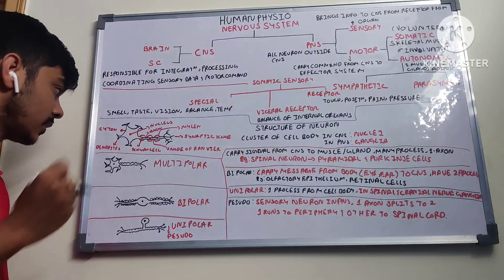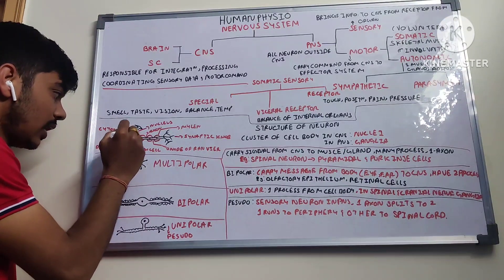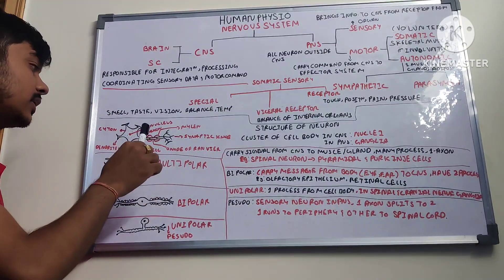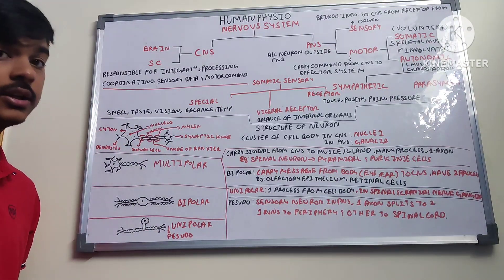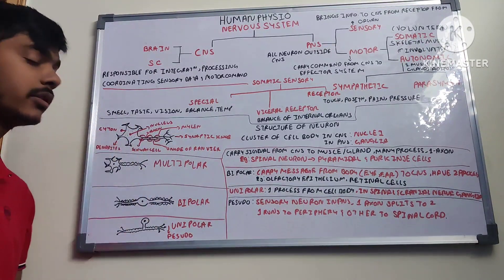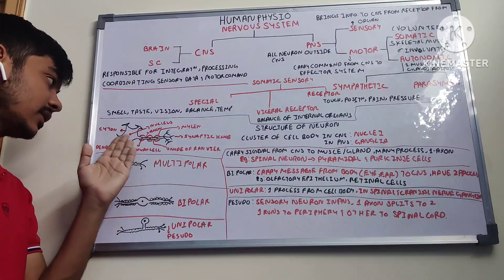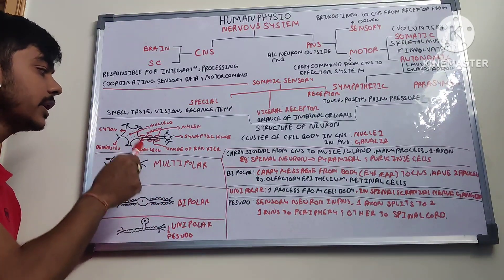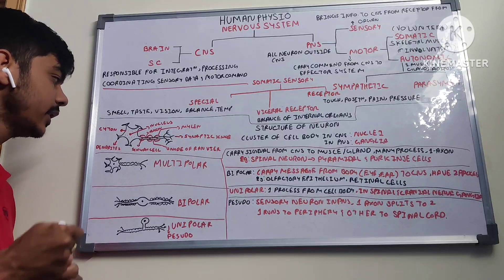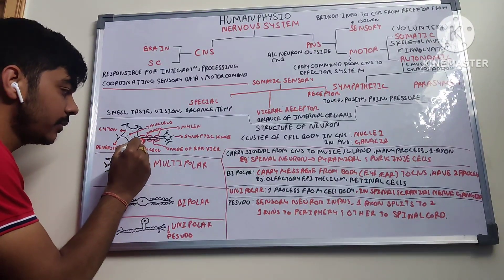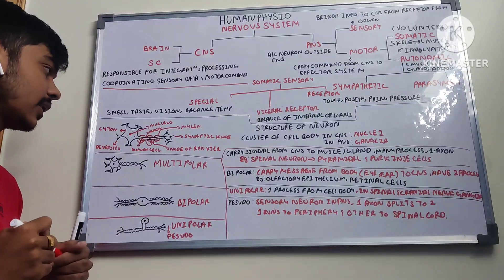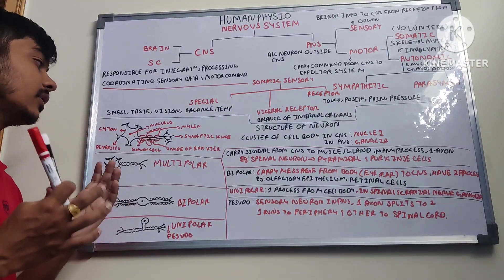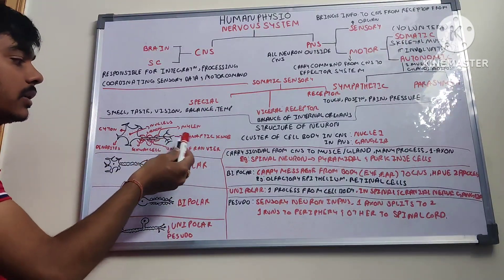There are two types of neurons: the myelinated neuron and the non-myelinated neuron. A myelinated neuron has a myelin sheath, and each myelin sheath consists of Schwann cells. The gap between them is called the node of Ranvier. At the nodes, saltatory conduction takes place — the impulse jumps from one node of Ranvier to the other. This is why conduction is fast. The myelin sheath is adipose tissue and is basically for the protection of the neuron.